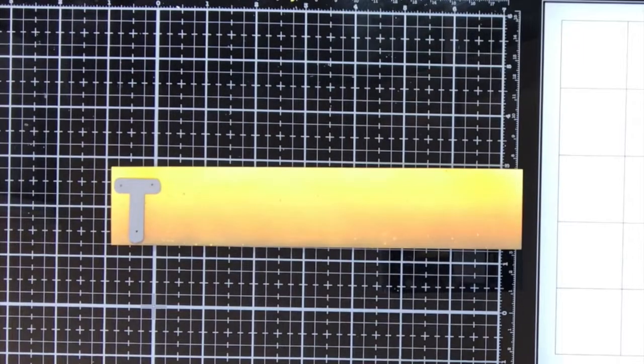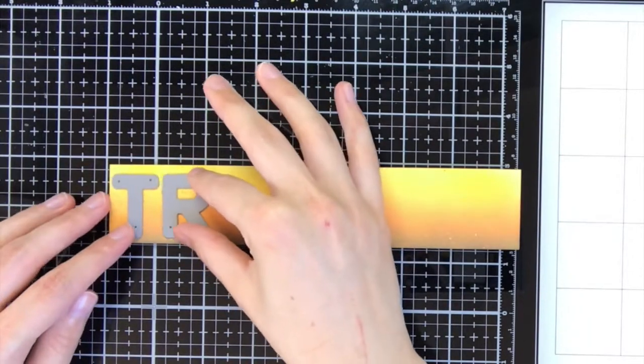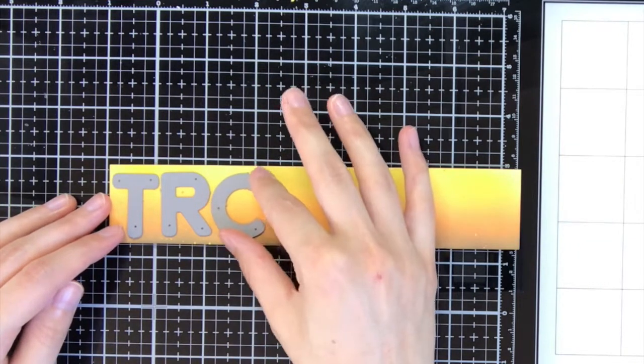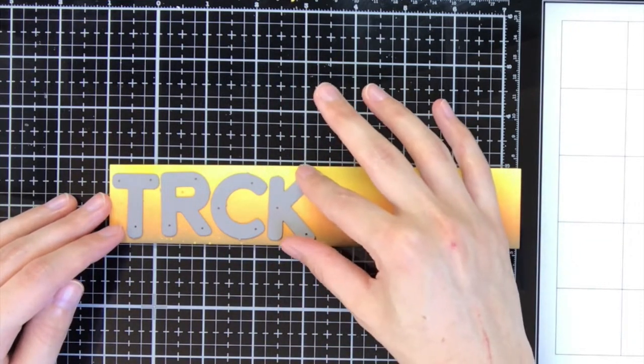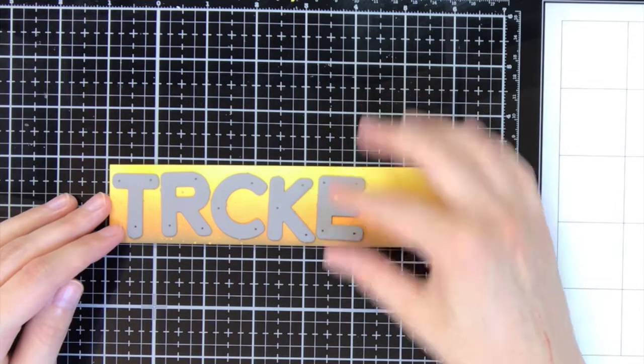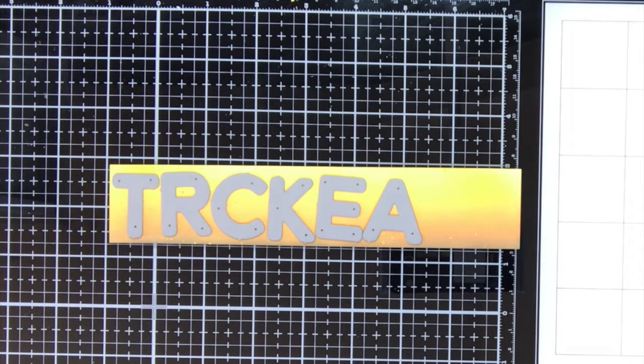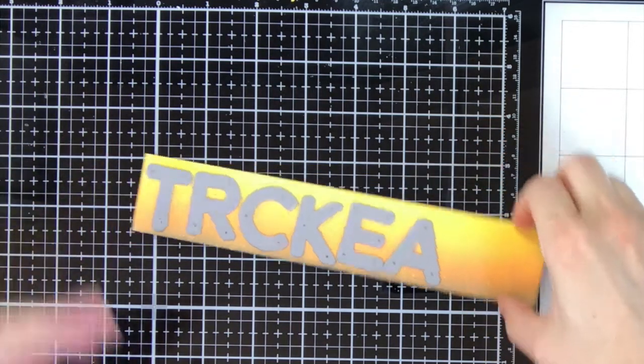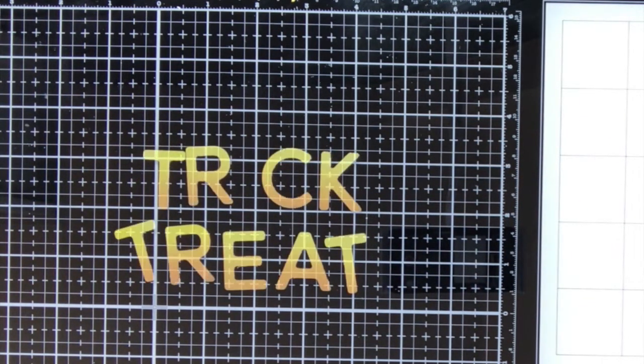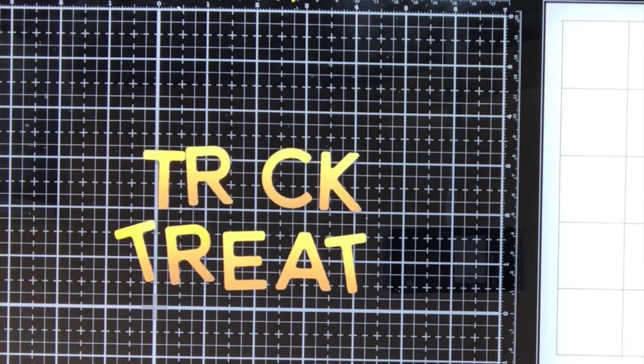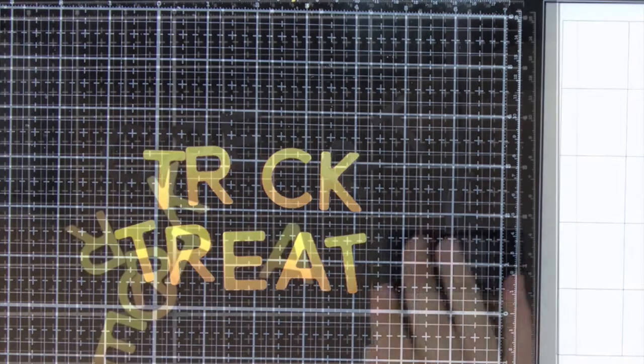To create the sentiment I am going to use the headliner alpha from Mama Elephant. The sentiment is going to read Trick or Treat. I am die cutting all the letters except the I, because I wanted to put one of the little foxes instead of the I.